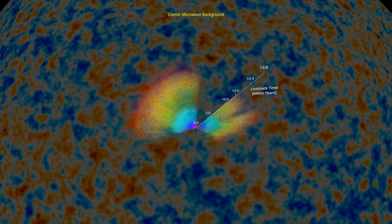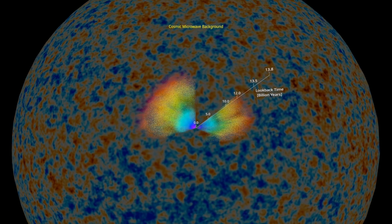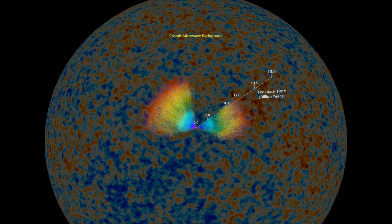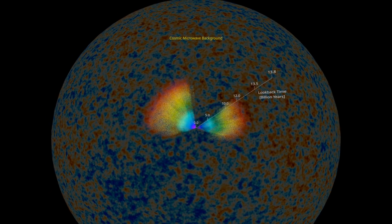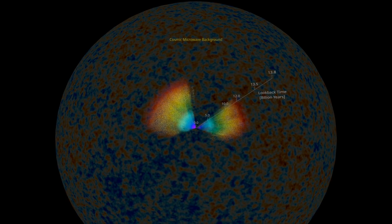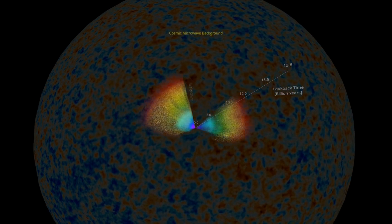Seen here as a colorful pattern projected onto a sphere, the cosmic microwave background is the thermal relic of the universe, which dates back to about 400,000 years after the birth of the universe, also known as the Big Bang.